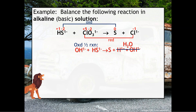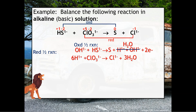We add electrons to balance for charge. It's neutral on the right and −2 on the left, so we add two electrons on the right-hand side — that takes care of our oxidation half reaction. For the reduction half reaction, we bring everything down and follow the same steps. Chlorine is already balanced. We balance for oxygen with water: three oxygens on the left means we need three waters on the right. Adding water incorporates H+, so we need six H+ on the left. Because this is alkaline solution, we add six OH- to the left and six OH- to the right.